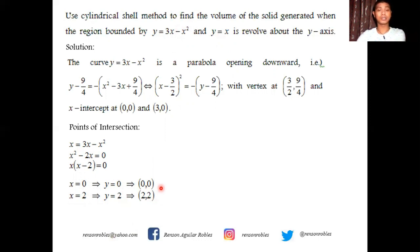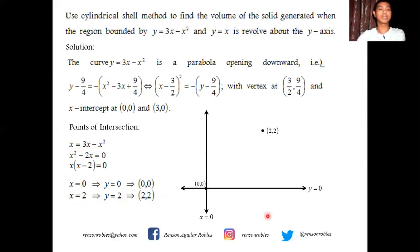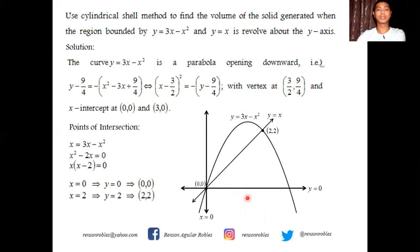We now plot these points. This is the y-axis (x = 0), the x-axis (y = 0), and we have the point (0, 0) and the point (2, 2). We draw the parabola y = 3x − x², which passes through (0, 0) with its vertex, and then the line y = x. The region is bounded by this line and the downward parabola y = 3x − x², and this region is revolved about the y-axis.